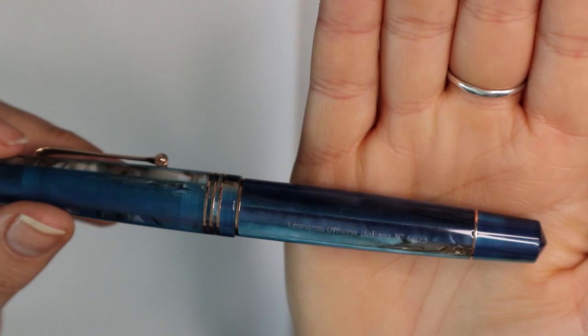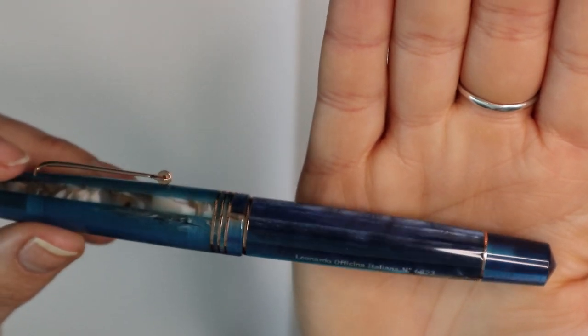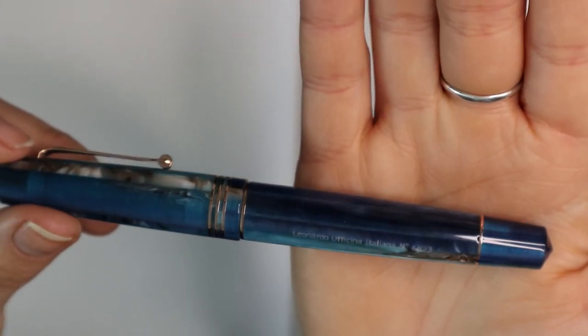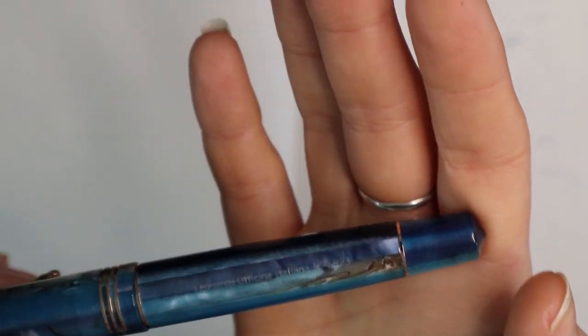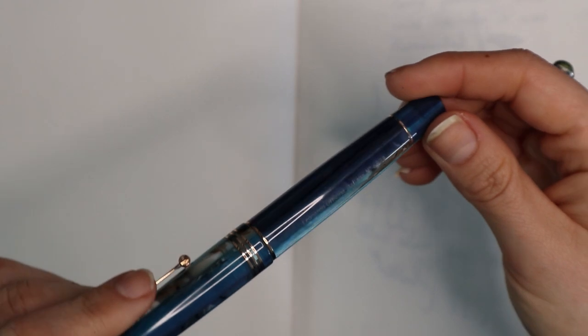Then right there is the imprint that says Leonardo Officina Italiana and then a number. Let me read the number. The number is 6823. Don't really know why these are numbered, they're not really special edition or anything, but yeah that is the pen with artificial lighting.